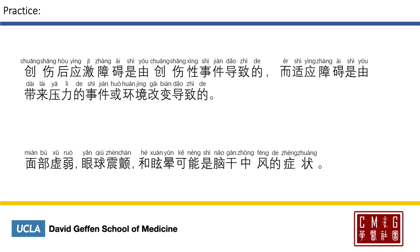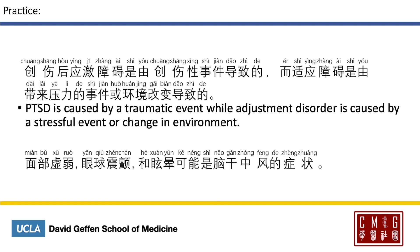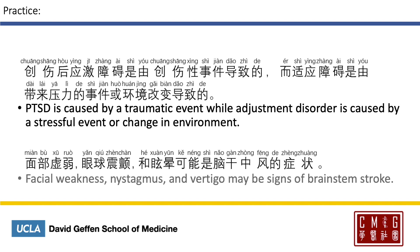Here's some practice. 创伤后应激障碍是由创伤性事件导致的，而适应障碍是由带来压力的事件和环境改变所导致的。 In English: PTSD is caused by traumatic events, while adjustment disorder is caused by stressful events or change in environment. 面部虚弱、眼球震颤和眩晕可能是脑干中风的症状。 Facial weakness, nystagmus, and vertigo may be signs of brain stem stroke.